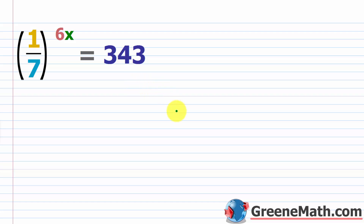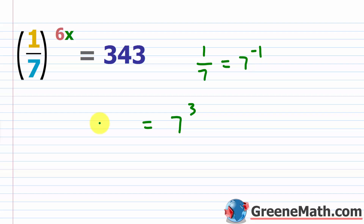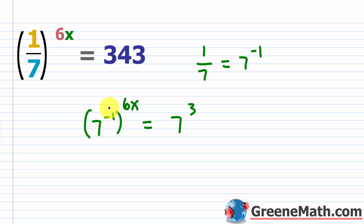On the right side I can write seven cubed. On the left side I don't have seven — I have one over seven. Here's where you use your rules of exponents: one over seven equals seven to the power of negative one. So this is two steps: first, one over seven is seven to the negative one, raised to the power of six x. Then using the power-to-power rule, I multiply exponents: negative one times six x gives negative six x.